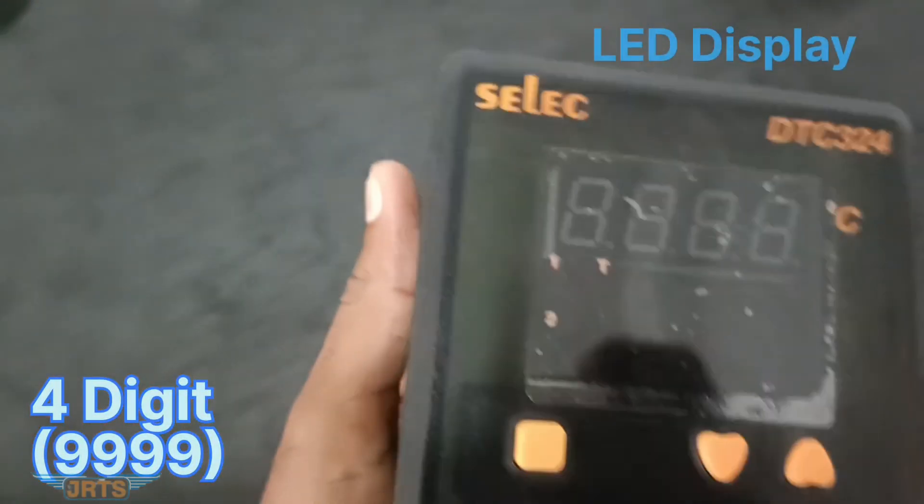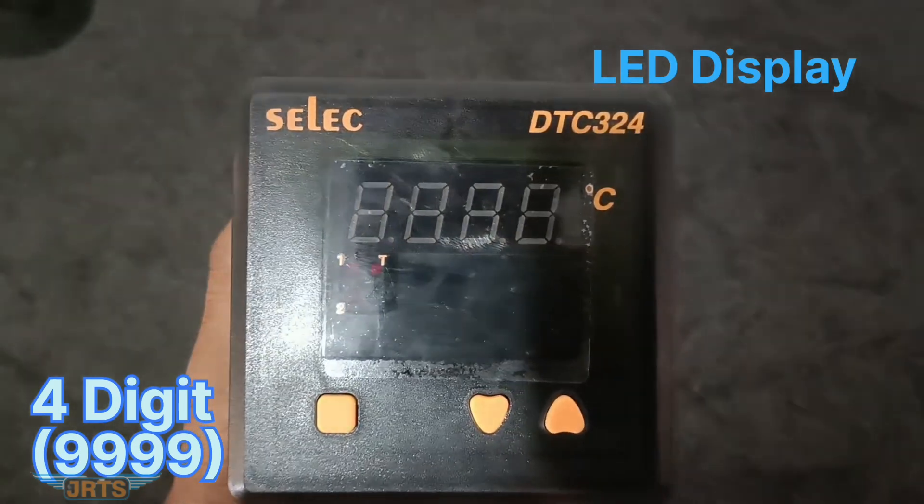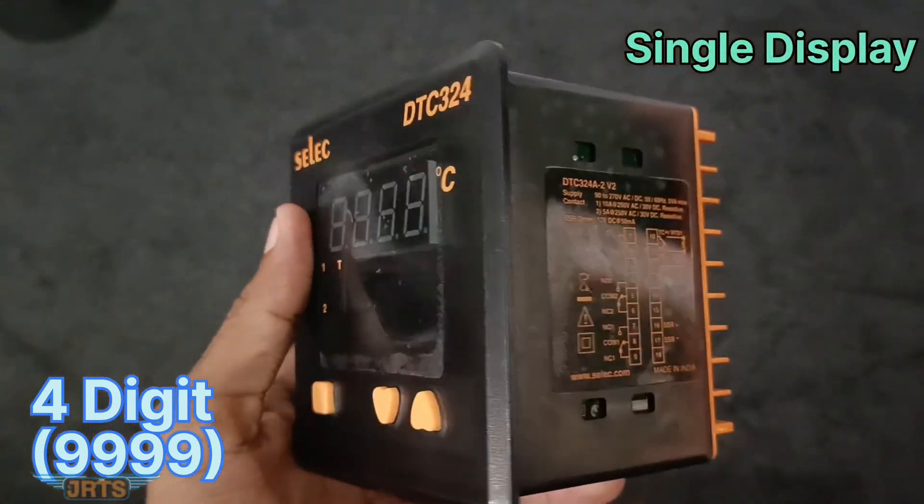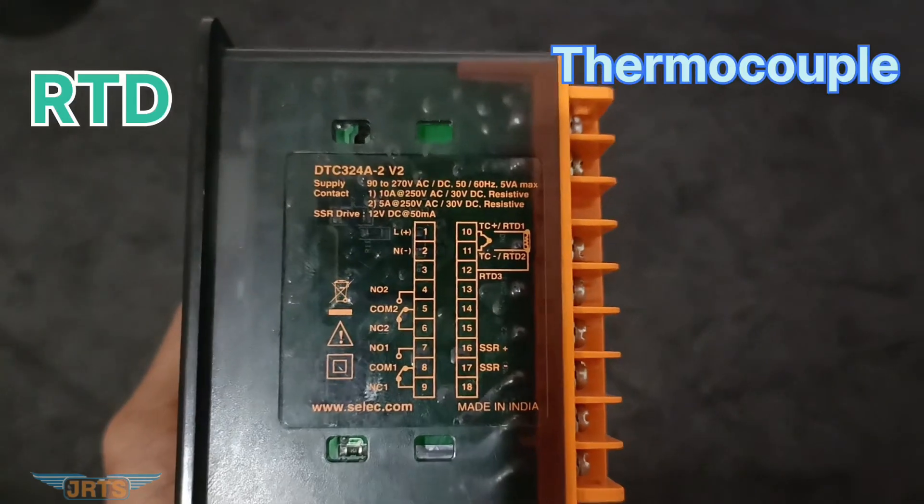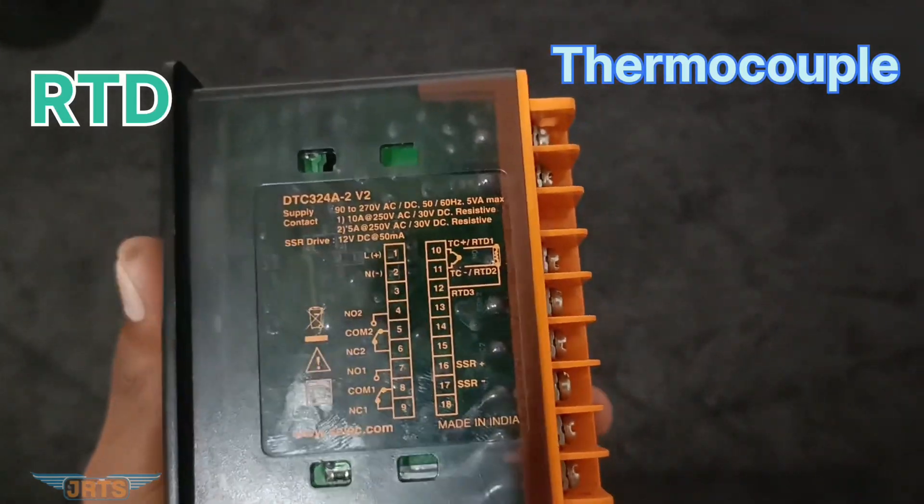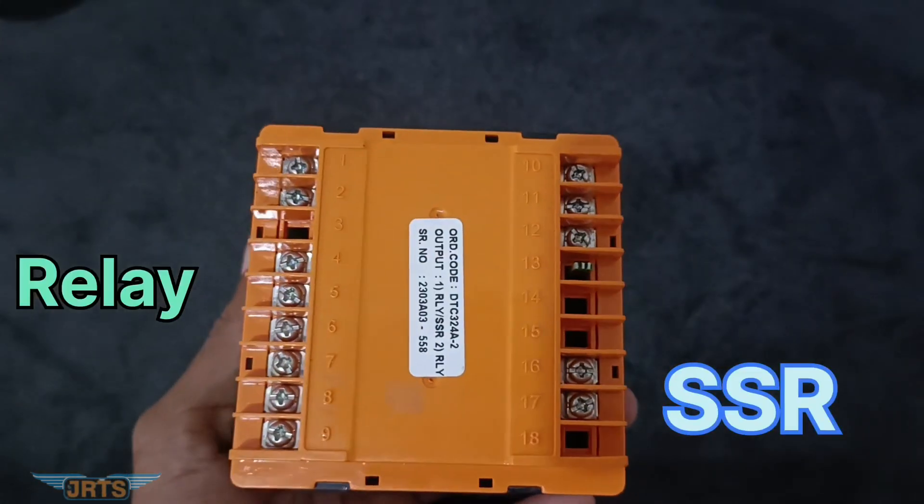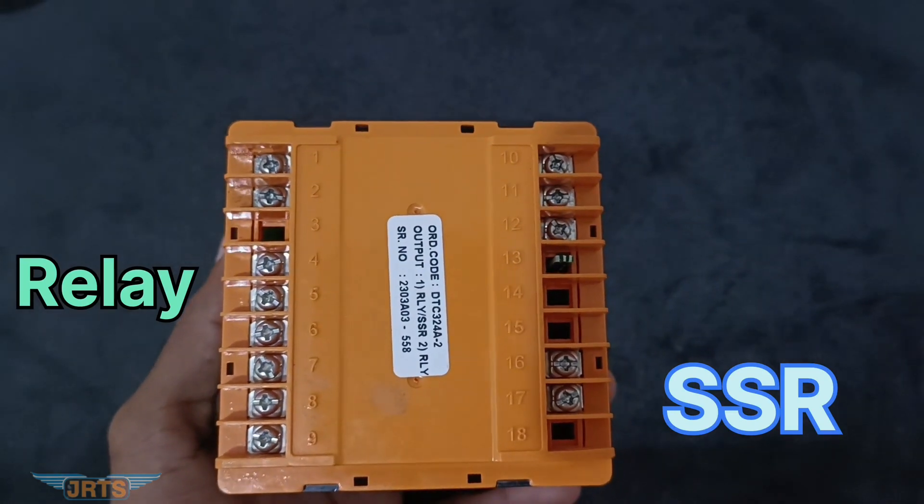The SELECT DTC324 controller is a 4 digit 7 segment LED single display controller. It can accept thermocouple and RTD inputs. It has both SSR and relay outputs.